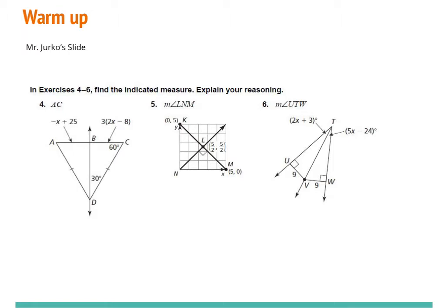In our warm-up, exercises four through six, find the indicated measure and explain your reasoning. In number four, it wants us to find AC — that base side from point A to point C. First, we need to figure out one piece of information. We know that these two sides are congruent, but is that enough to say that BD is the perpendicular bisector? It's not. We need one more piece of information: we need to know if where DB intersects AC is at a 90-degree angle. Do we know if that's 90 degrees? No, we don't. Can we figure it out?